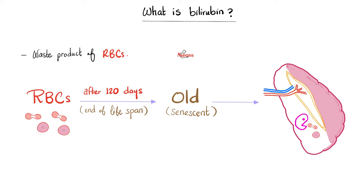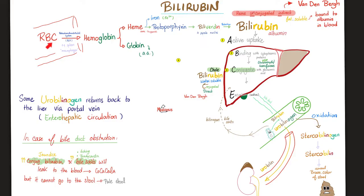What is bilirubin? It's the end product of breaking down red blood cells after their lifespan. When you break down red blood cells, you get hemoglobin. Hemoglobin is made of heme and globin. Heme is made of iron and protoporphyrin. Protoporphyrin will become biliverdin — 'verd' means green. Biliverdin will become bilirubin — 'rubra' means red. This bilirubin at this stage is not conjugated yet, meaning it is lipid-soluble, nonpolar, and not water-soluble.